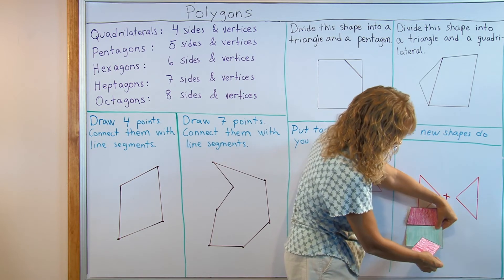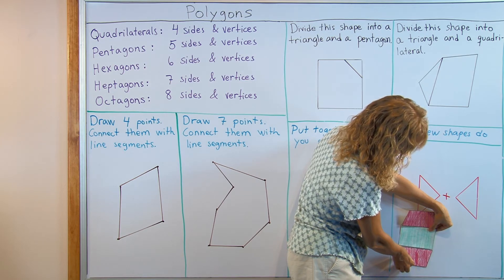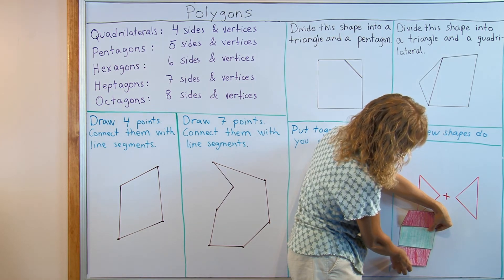Or I could add a third piece into it from here. And then I would have one, two, three, four, five, six, seven, eight. An octagon.